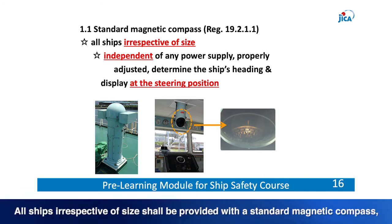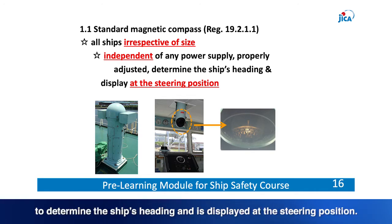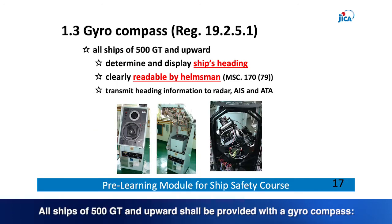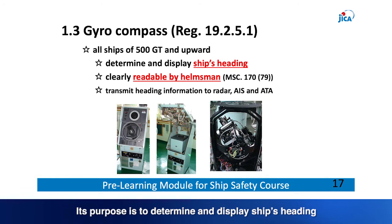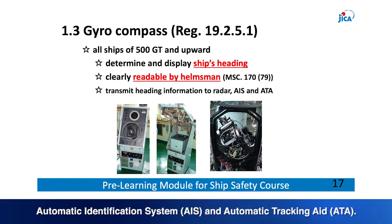All ships, irrespective of size, shall be provided with a standard magnetic compass that is independent of any power supply and properly adjusted to determine the ship's heading, displayed at the steering position. All ships of 500 gross tonnage and upward shall be provided with a gyro compass, to determine and display the ship's heading, clearly readable by the helmsman, and to transmit heading information to radar, Automatic Identification System (AIS), and Automatic Tracking Aid (ATA).